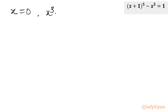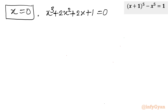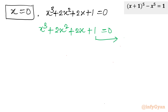The cubic equation is x³ + 2x² + 2x + 1 = 0. I will solve this using the rational root theorem and synthetic division. The eligible factors for the constant term are ±1. Trying x = 1 doesn't work since all terms are positive. Let's try x = −1: (−1)³ + 2(−1)² + 2(−1) + 1 = −1 + 2 − 2 + 1 = 0. So x = −1 is a root.